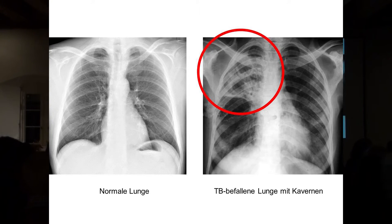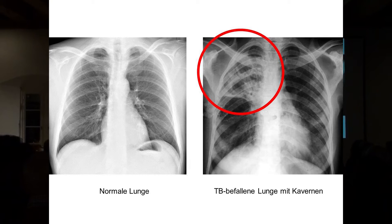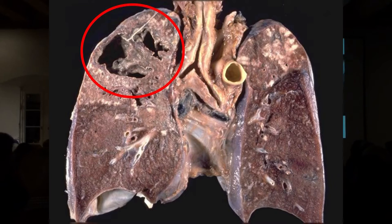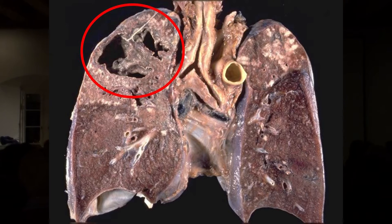Die Tuberkulose ist in erster Linie eine Lungenerkrankung. Für das ungeübte Auge ist es relativ schwierig, auf diesen Röntgenbildern den Unterschied zwischen einer gesunden Lunge und einer TB-befallenen Lunge zu sehen. Einfacher wird es, wenn man sich so eine Lunge richtig von nahe anschaut – also in dem Fall eine Lunge, die aus dem TB-Patienten rausoperiert wurde. Sie sehen oben links diese Löcher, sogenannte Kavernen, die da entstehen, durch diese Krankheit verursacht.